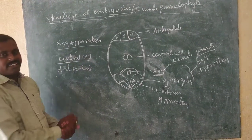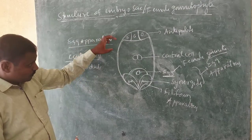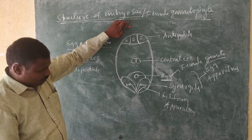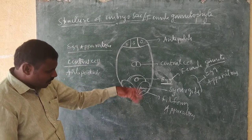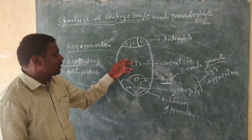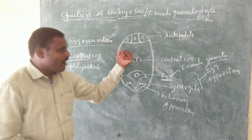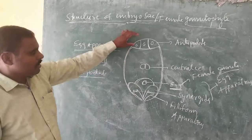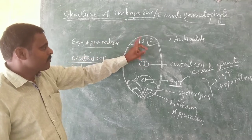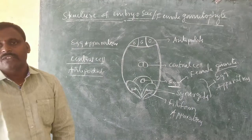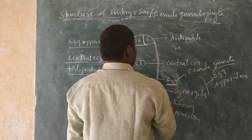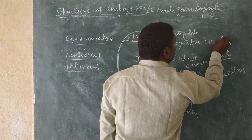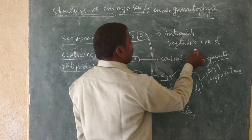The central cell is formed by the fusion of two polar nuclei — one from the chalazal end and one from the micropylar end — which fuse at the center to produce the central cell or polar nuclei. The antipodals are developed at the chalazal end and are also called vegetative cells of the embryo sac. The antipodals may degenerate before or after fertilization.